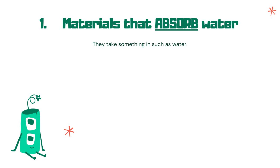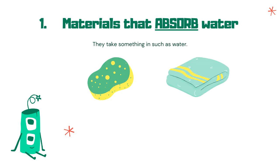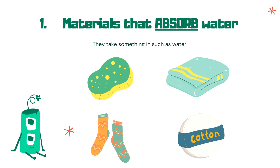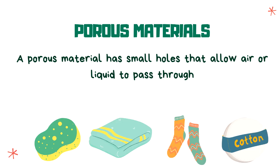Ito yung mga bagay na sumisipsip ng tubig o iba pang liquid substances. Halimbawa ay sponge, tuwalya, medyas, bulak, at iba pa. Tinatawag natin silang porous materials. A porous material has small holes that allow air or liquid to pass through.